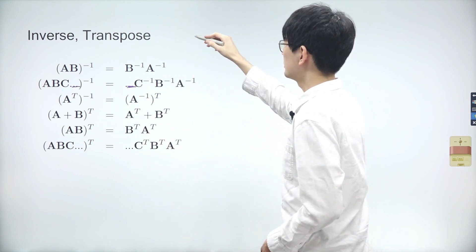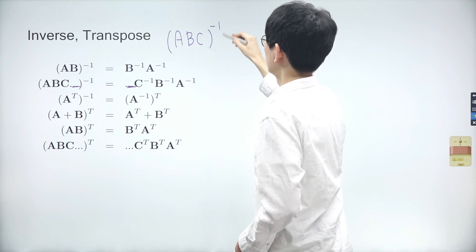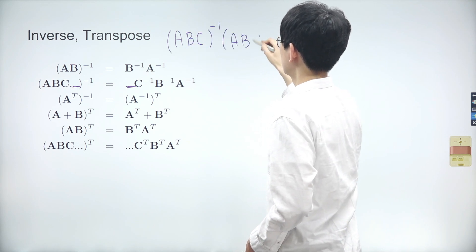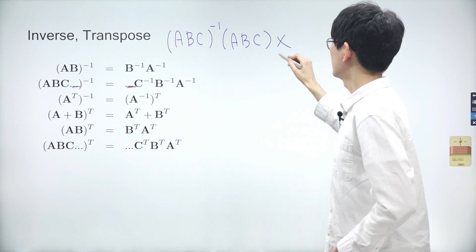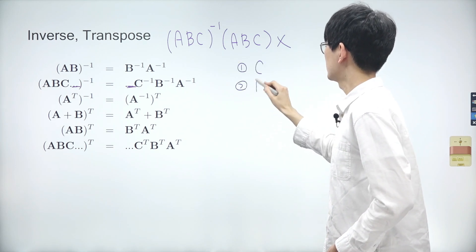Let's look at the second property. Let's ignore the dots for now. In the multiplication of ABC inverse, ABC, and X, the order of transformation is C, B, and A.